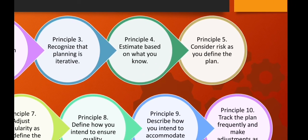Principle four: estimate based on what you know. The intent of estimation is to provide an indication of effort, cost, and task duration based on the team's current understanding of the work to be done. Principle five: consider risk as you define the plan. If you have identified risks that have high impact and high probability, contingency planning is necessary.